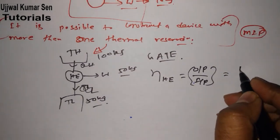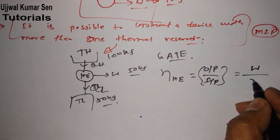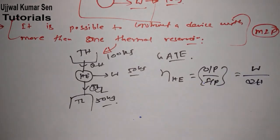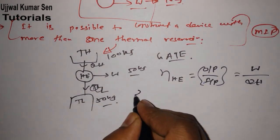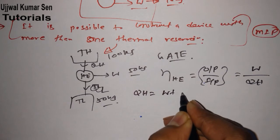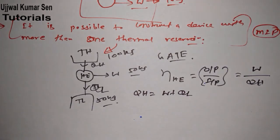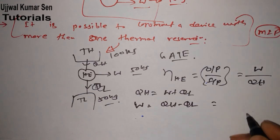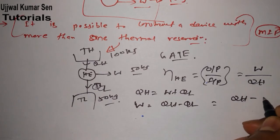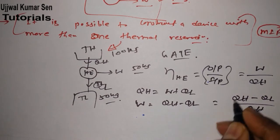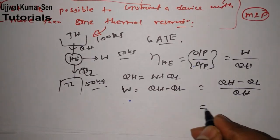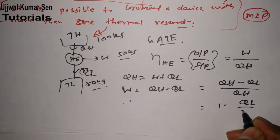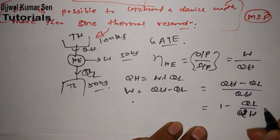Simple formula for finding out efficiency of any engine is output by input. So what is output here? W by input QH. One most important thing we can say that from these arrows only we can say that QH equals W plus QL. W is equal to QH minus QL. Therefore we can write this equation as QH minus QL by QH. Just divide these two by QH.